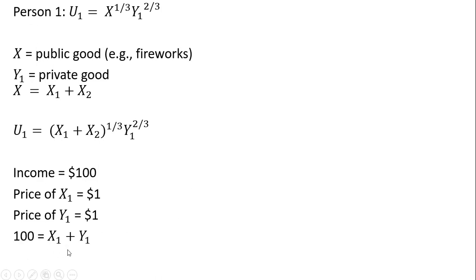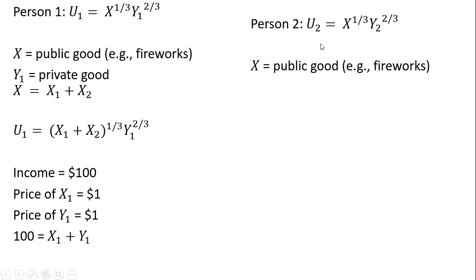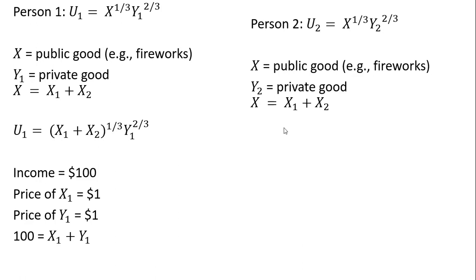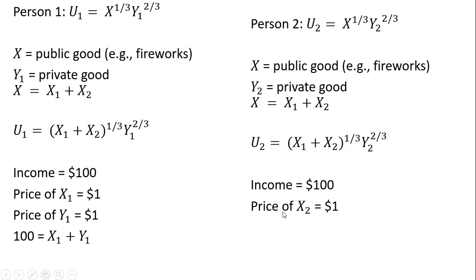The budget constraint for consumer 1 is given as follows. For consumer 2, basically the same setup — same type of utility function, with the public good and the private good. The amount of public good available to consumer 2 is the amount of fireworks that both consumers purchase. Making a substitution for x, we have the same budget constraint for consumer 2.